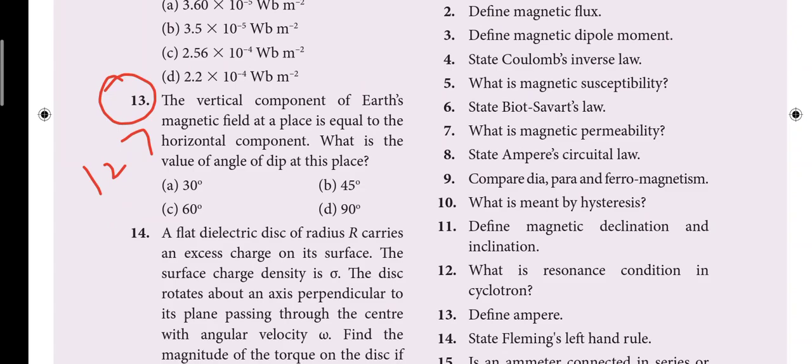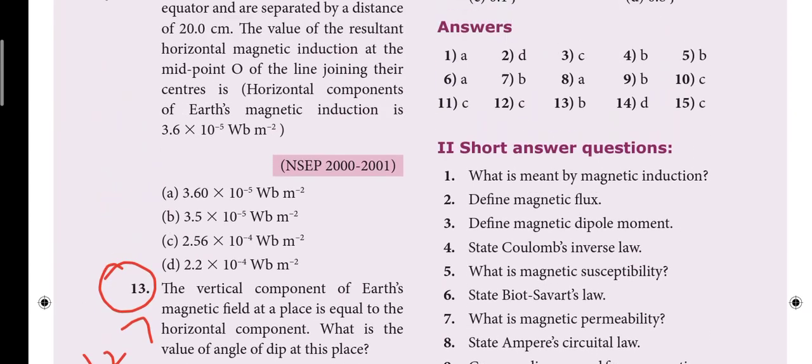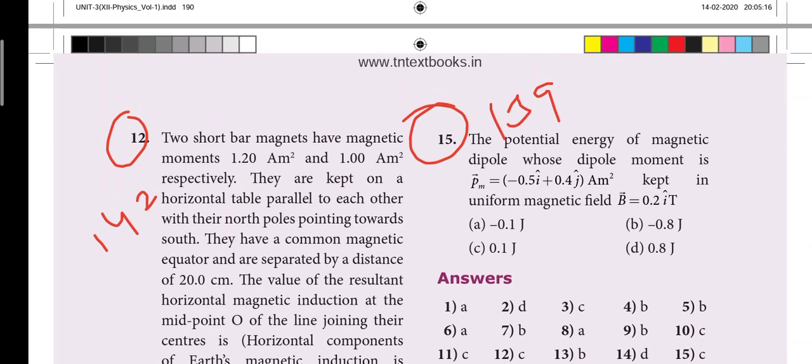Next, 13th one, the vertical component of earth magnetic field. So that's 127 page based. It's also reduced one. Next, 15th one, the potential energy of magnetic dipole. So this one, 139 page based. It's also reduced one word.